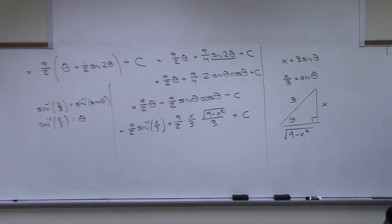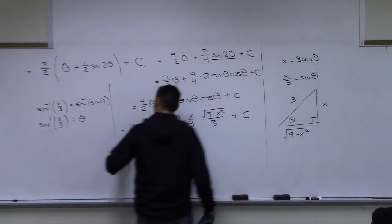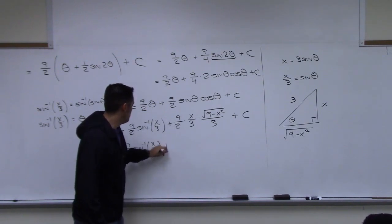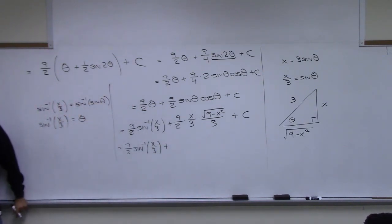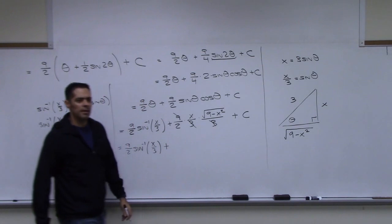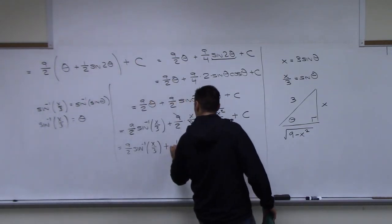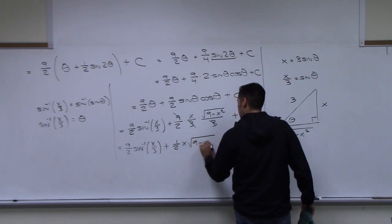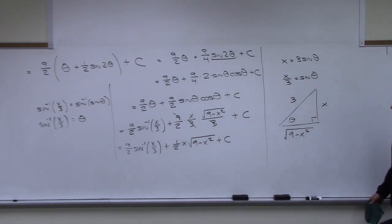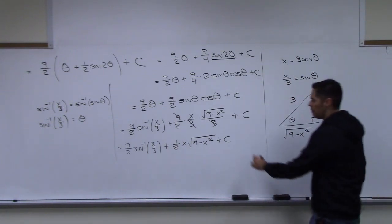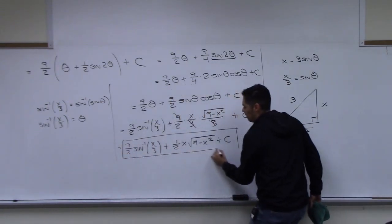The final antiderivative is nine halves arcsin(x/3) plus one half x √(9 − x²) plus C. That's a rather complex-looking answer for such a simple-looking integrand of just √(9 − x²).